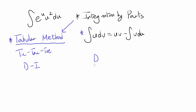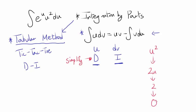How do you do the tabular method? You're going to pick a part to differentiate and a part to integrate — in a traditional sense, picking u and dv. When you pick something to differentiate, you want to pick something that's going to simplify the more times you differentiate it. In our case, u squared simplifies: u squared, then 2u, then 2, then it goes to 0. But e to the u stays the same all the way down. So we want to pick u squared as our differentiation part.